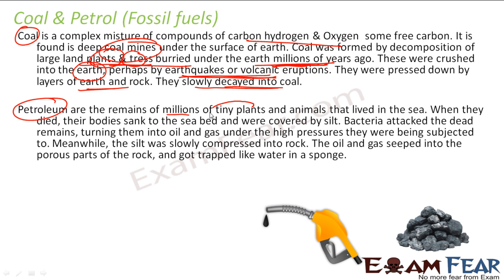For petroleum, this was also the remains of millions of tiny plants and animals. They lived under the sea because normally you get petrol from the sea. They are nothing but remains of tiny plants and animals — sea creatures. When they died, their bodies sank into the seabed, which is covered with silt. Silt is basically mud. And the bacteria attacked the dead bodies and turned them into oil and gas.